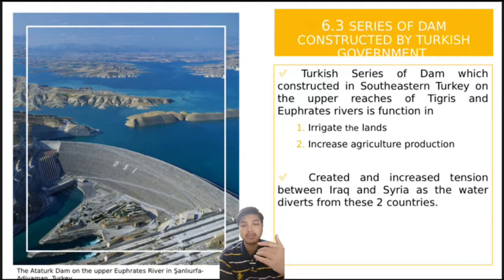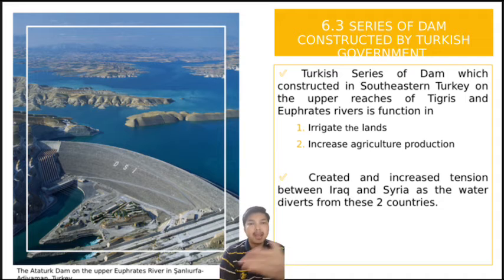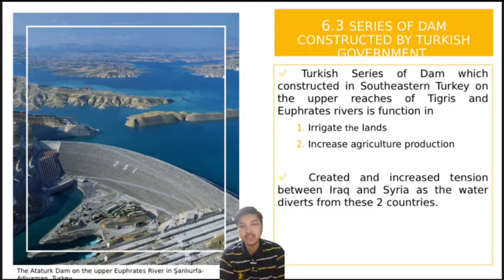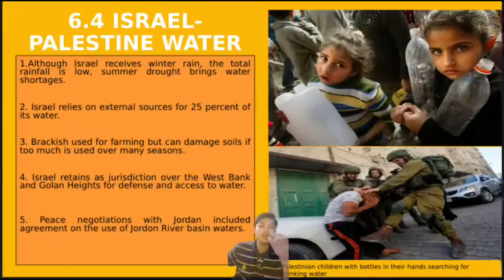The Turkish government built a series of dams in southeastern Turkey on the upper reaches of the Tigris and Euphrates rivers. The objective was to integrate land and increase agricultural production. However, this caused tension between Iraq and Syria because the dam diverted water away from those two countries.